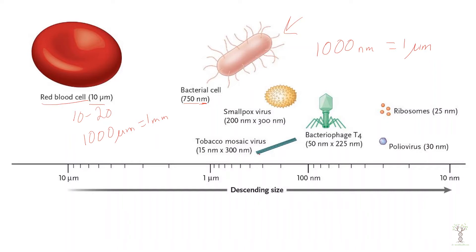Tobacco mosaic virus was one of the very first ones ever discovered. Here's a smallpox virus. A bacteriophage is a virus that can infect bacteria. And then to compare, here are ribosomes. Remember that ribosomes are organelles in our cells that help us to synthesize proteins. A polio virus is about the size of a ribosome.